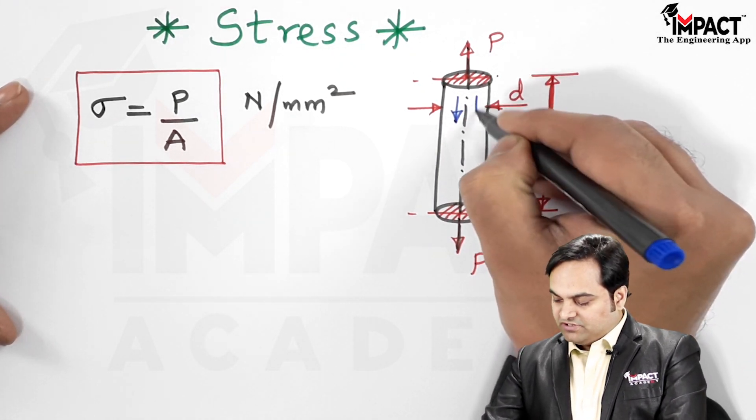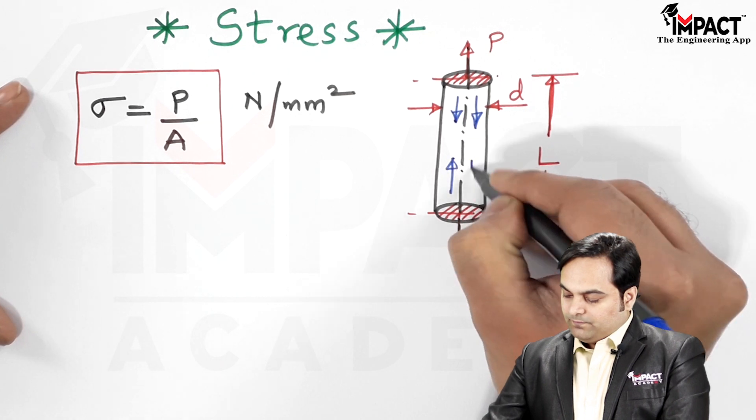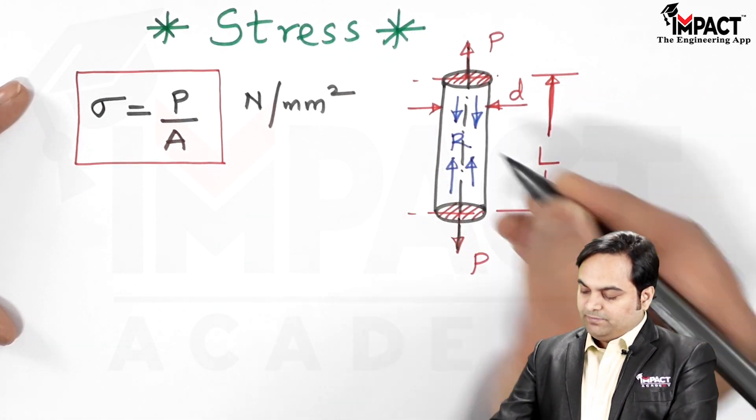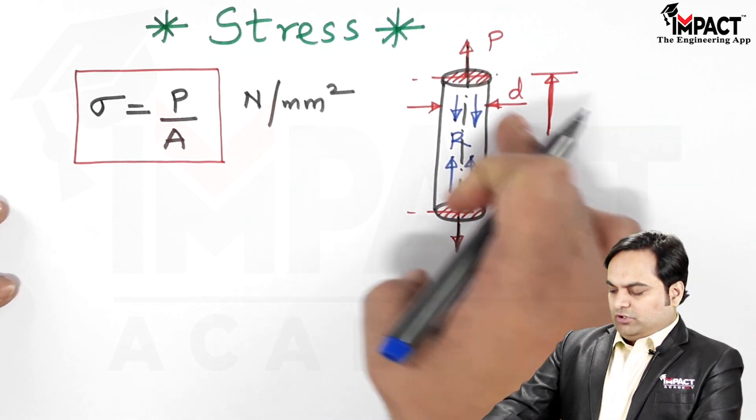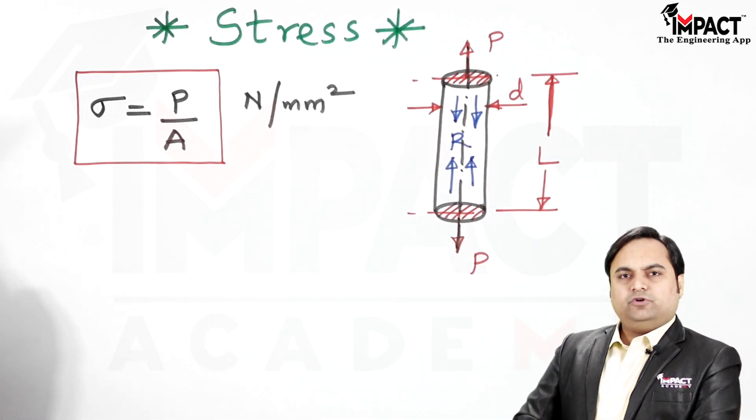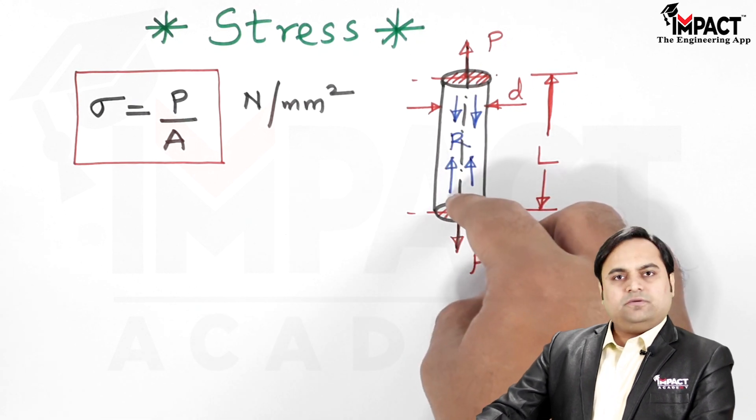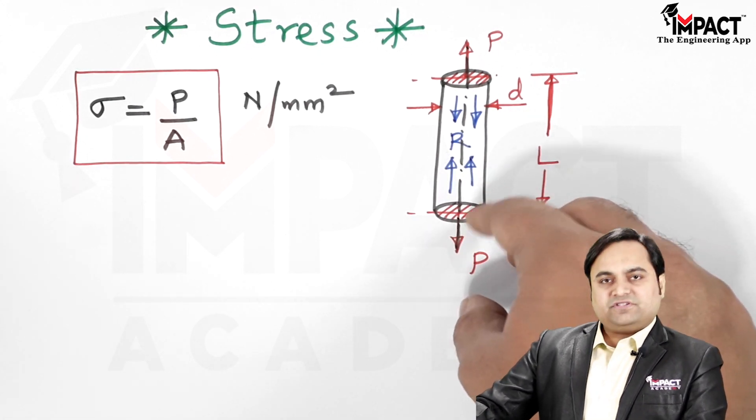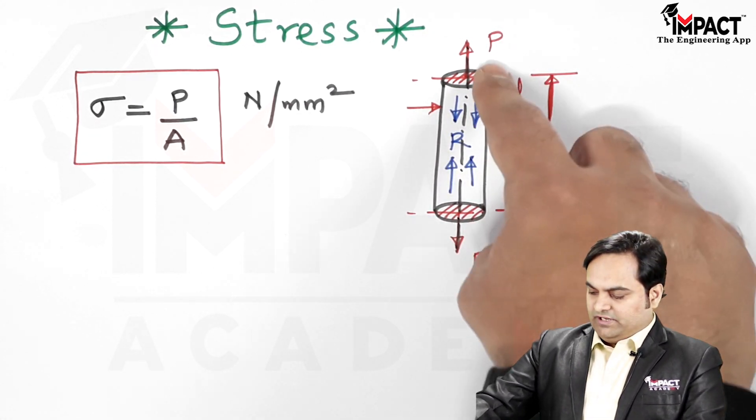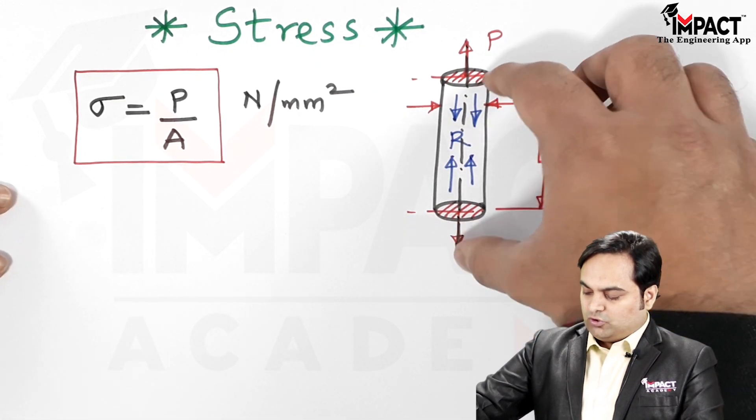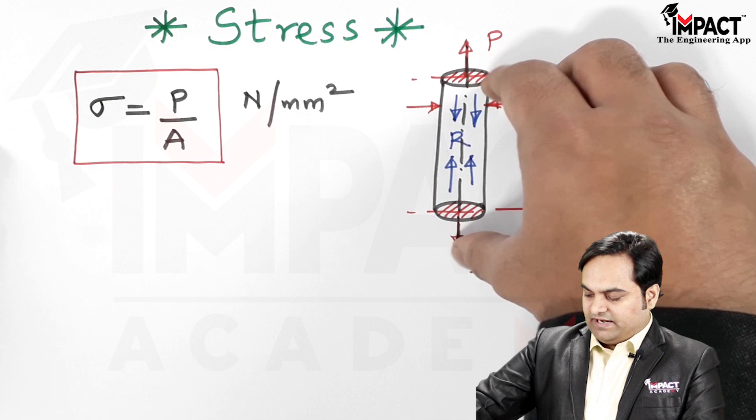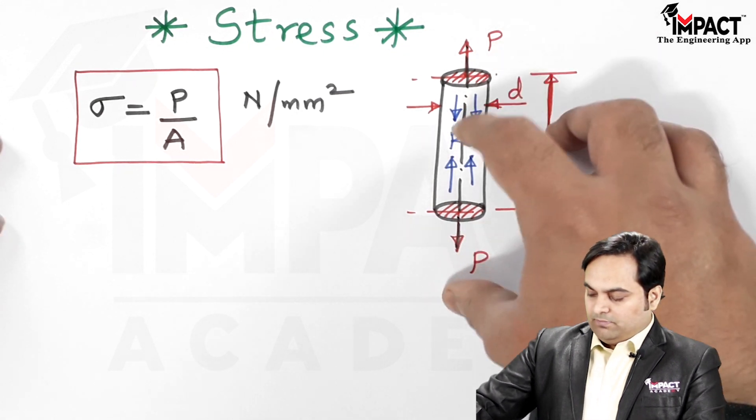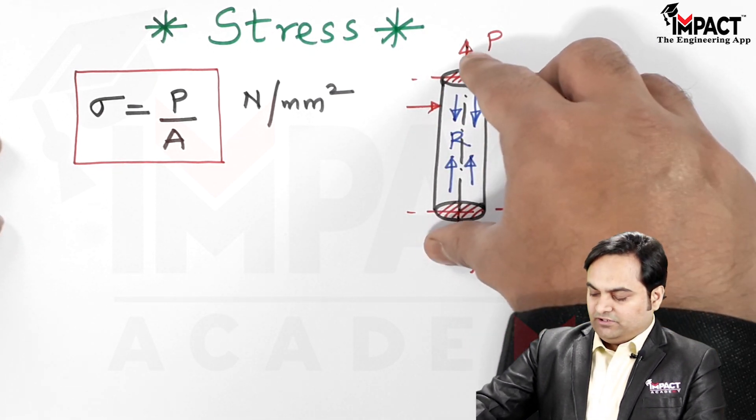This internal resistance is denoted by R and that internal resistance is due to the cohesiveness or we can say due to the strength of this material that it is resisting the external loading. The external load is trying to pull this rod in a tensile manner or trying to increase the length of this rod, but due to the internal resistance being set up, it will try to bring the rod back to its original position.